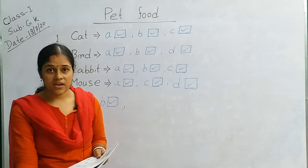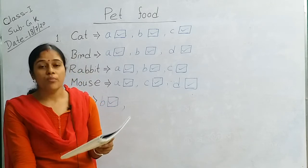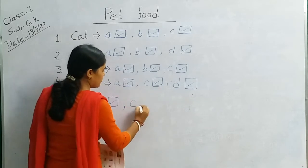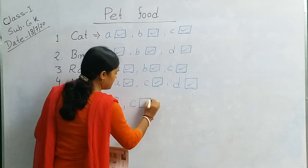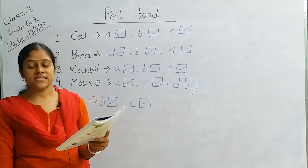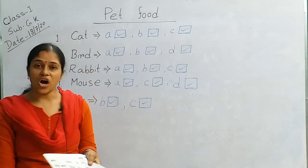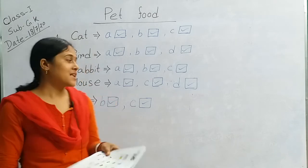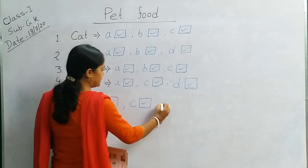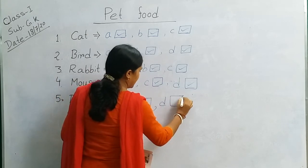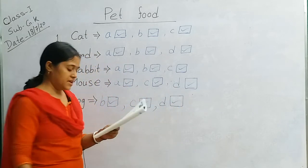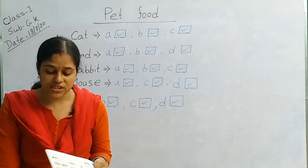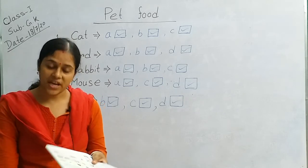Next, dog eats bones. Yes, bones are their favorite food. Next, number D, dog eats bread, slice of bread. Number D, bread. Dog eats cookies, dog eats bones, dog eats bread.